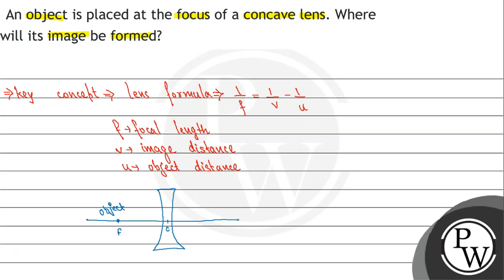If we place an object at focus, its distance from the optical center will be equal to the focal length f. In this case, the object distance will be equal to minus f, because rays of light are incident from the left, and we measure distance in the direction of incidence. According to sign conventions, this will be negative.